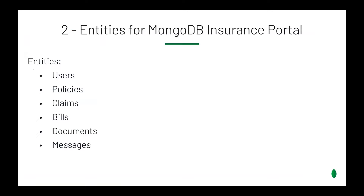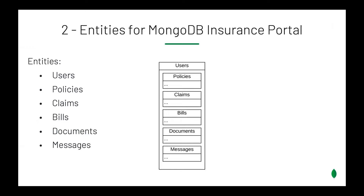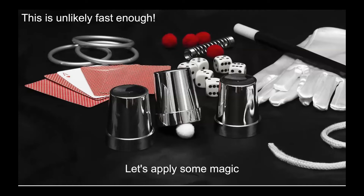Looking at relationships between data, the entities are users, policy, claims, bill, documents, and messages — all identifiable from our queries and UI. On the simplicity side, we could have one large users collection with policies and claims embedded. Everything linked as one-to-many, everything embedded — a pretty simple design. The issue is it's unlikely to be fast enough. This is where we use our next phase and apply patterns. I'll let Justin handle the application of patterns to this design.